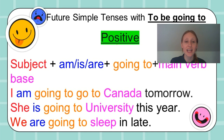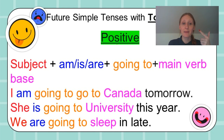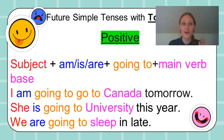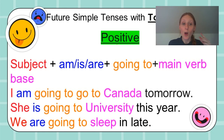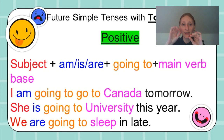Now let's talk about future simple tenses with 'be going to' in their positive form. We have the subject, am/is/are, going to, and the main verb base. I know this looks like a lot, but let's break it down with our colors. I am going to Canada tomorrow. She is going to university this year. We are going to sleep in late. This is like a math formula — when you want to make a sentence, just put in what you need and you can start making your own sentences.